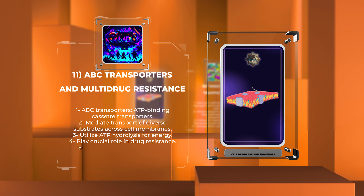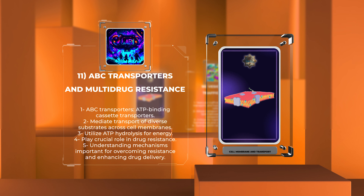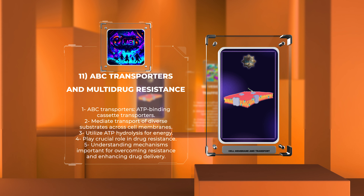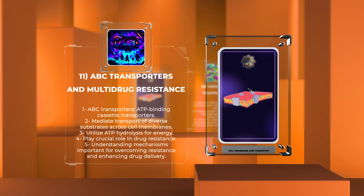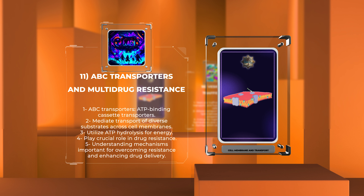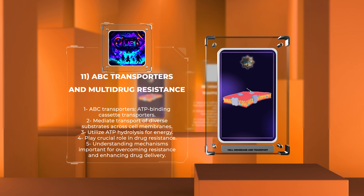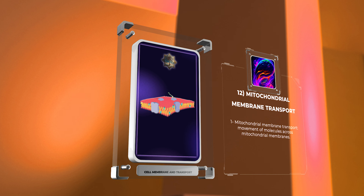ABC transporters, also known as ATP-binding cassette transporters, are a superfamily of membrane proteins that mediate the transport of diverse substrates across cell membranes. These transporters utilize ATP hydrolysis as a source of energy to drive substrate transport. ABC transporters play a crucial role in drug resistance, as they actively pump drugs out of cells, reducing their effectiveness. Understanding the mechanisms of ABC transporters is vital for developing strategies to overcome multi-drug resistance and enhance drug delivery.